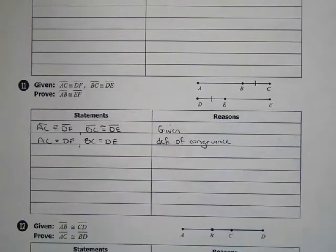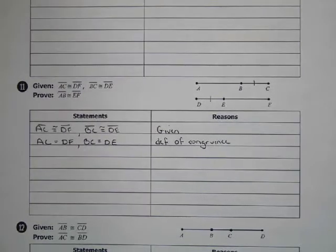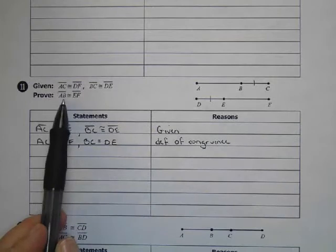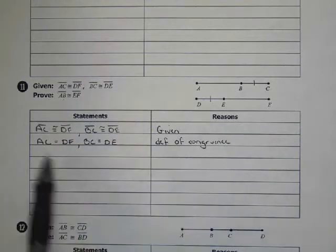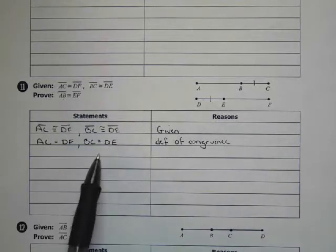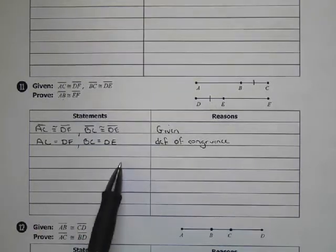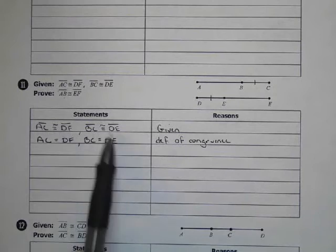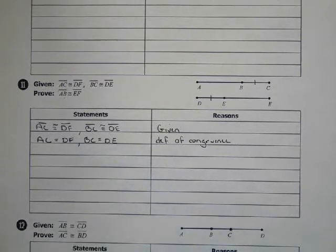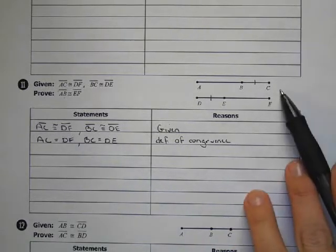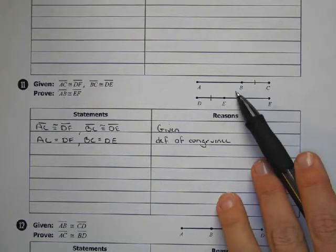Then you might think, okay, now I don't know where to go from here. But think about what you need to get to. I need somehow to get AB into my problem. Right now, AB is nowhere to be found. I also need to get segment EF into the problem. And right now, it's nowhere in this problem. But if we look at the segments, point B is between A and C, point E is between D and F.